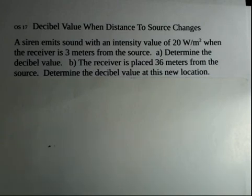So we have a hypothetical siren, and the intensity value is measured at 20 watts per square meter when the receiver is only 3 meters from the source. We can calculate that decibel value. Next, we're going to move the receiver to 36 meters away from the source, a factor of 12 further away, and we'll determine the new decibel value at that location in a couple different ways.